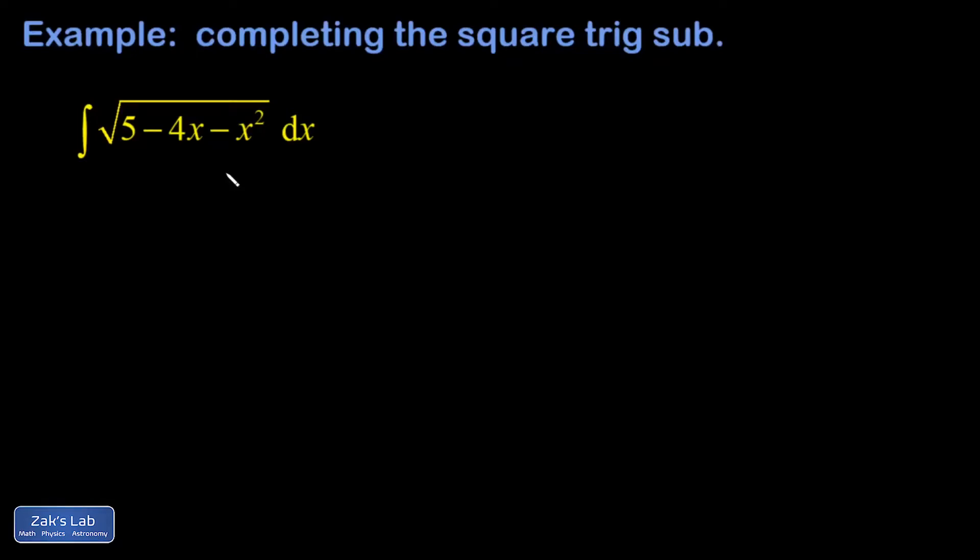When we're performing trig substitutions, we're always trying to meet the form of these Pythagorean identities like 1 plus a variable thing squared, 1 minus a variable thing squared, or a variable thing squared minus 1.